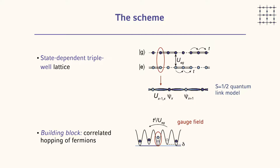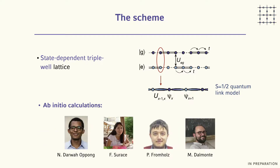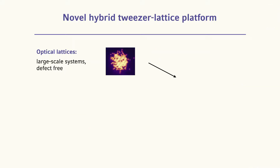The whole complexity of the mapping has been moved to the engineering of the lattice potential itself. Correlated hopping processes are well known from many experimental realizations, but engineering this specific type of potential is the challenge. We have worked out the band structure and implementation starting from ab initio calculations and showed that symmetry-breaking terms are very small. This work will appear on the archive very soon.